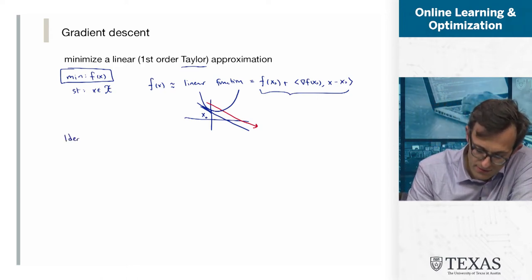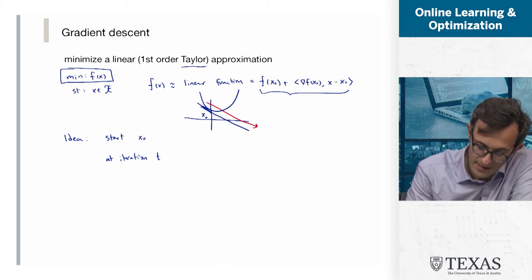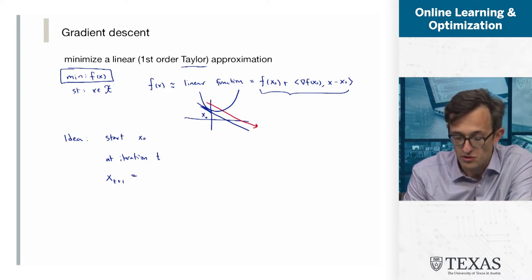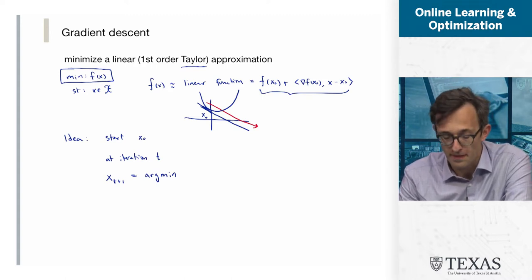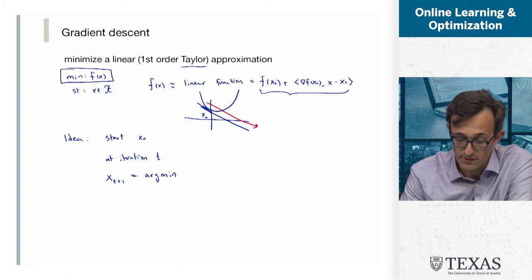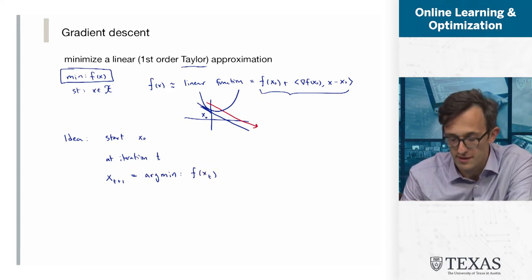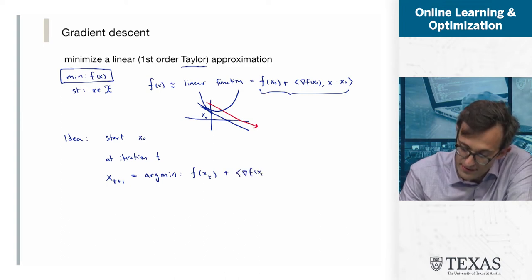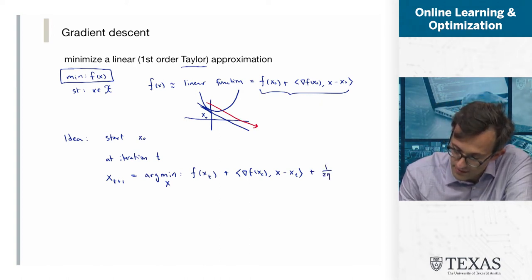The idea for gradient descent is: we start at some point x₀, and then at iteration t, we let x_{t+1} be the argmin — the argument that minimizes — this linear function plus a quadratic term. Specifically, it's the argmin over x of the Taylor series around the previous point x_t, plus the gradient of f(x_t) times (x minus x_t), plus a quadratic penalty term that penalizes x being very far from x_t.